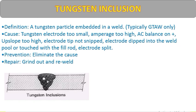Tungsten inclusion — white colored tungsten particles embedded in the weld; occurs only in GTAW (gas tungsten arc welding). Causes: tungsten electrode too small for the amperage being used, AC balance on positive half too high, electrode tip not properly ground, electrode dipped into the weld pool, or contact with the filler rod causing the electrode to contaminate the weld. Prevention: eliminate the cause. Repair: grind out the inclusion and re-weld.